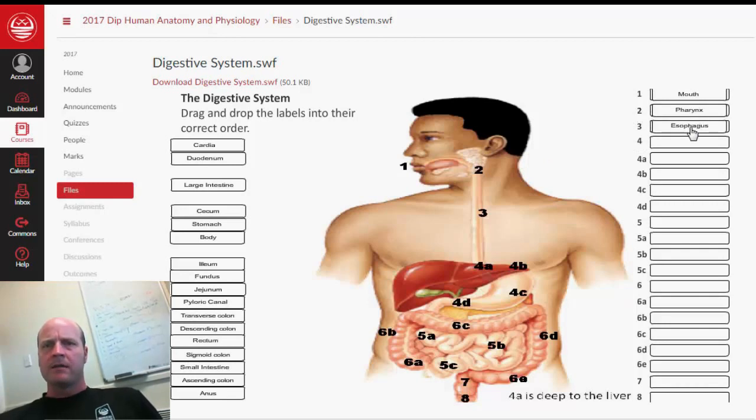So like we said before, depending on if it's American or British spelling, it may be esophagus or it may have an O in front. Either or is fine. So down through the esophagus, and then we enter the stomach.